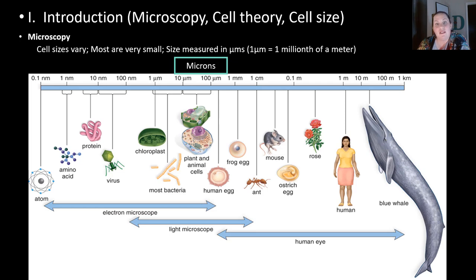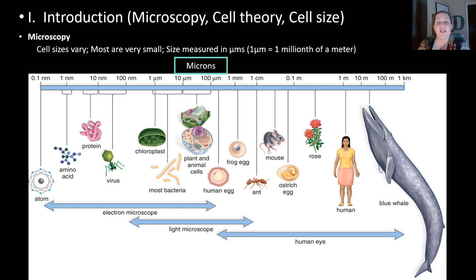There are a few cells that can be seen with the human eye, things like the human egg and frog eggs. These are known as microns — small measurements that these particular organisms have. They are one micrometer, which means they're one millionth of a meter, so they're very small.